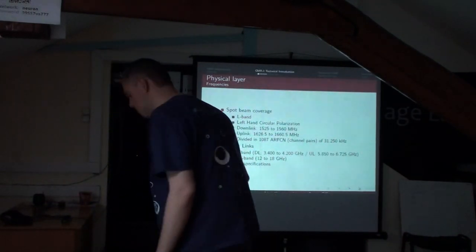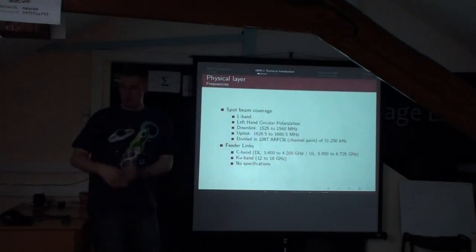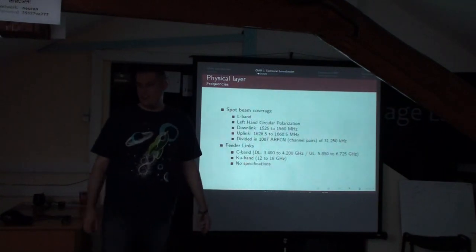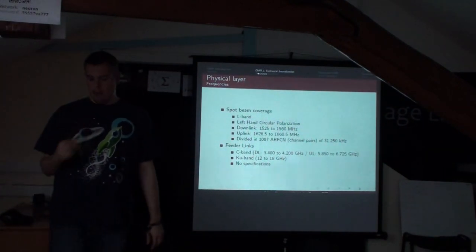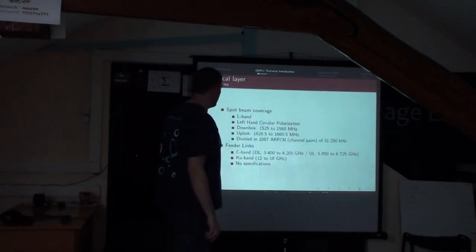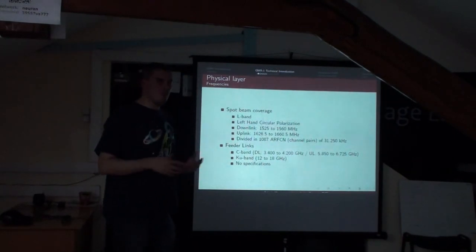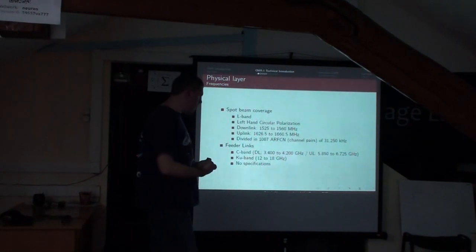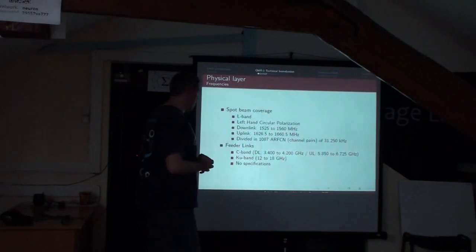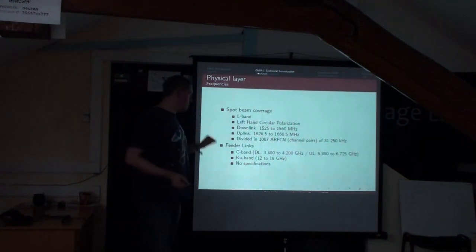The system uses left-hand circular polarization, which is important for the antenna design. The frequencies used are divided into uplink and downlink bands, and like in GSM they're further divided into RF channels — there are about a thousand of them. Something interesting is the feeder link. When I made this presentation we didn't have much information on it, but recently a person in St. Petersburg with access to a 6-meter dish sent us captures of what's on the air in C-band.